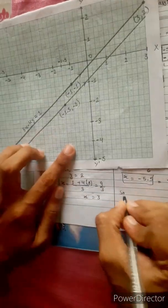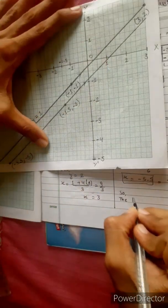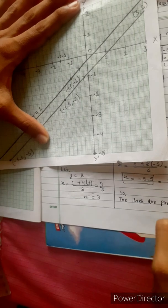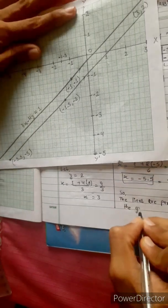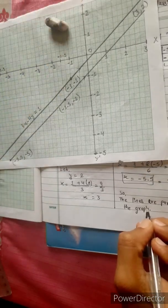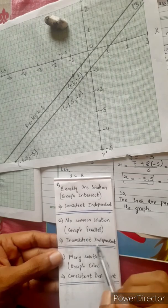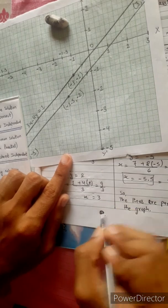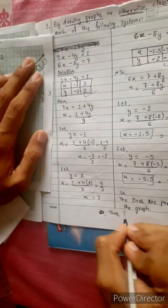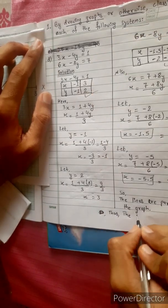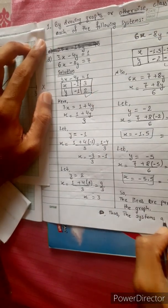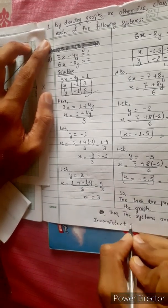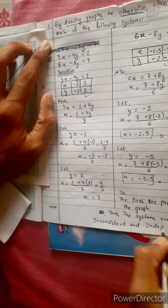The lines are parallel on the graph. Therefore, the following system of equations is inconsistent and independent.